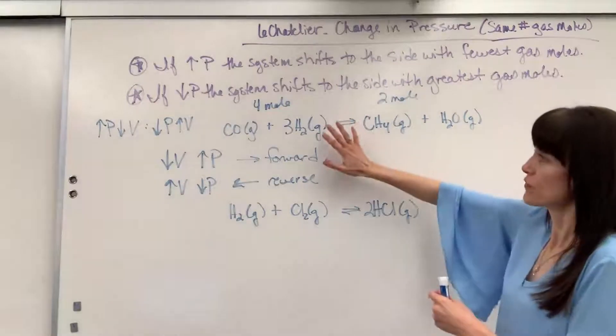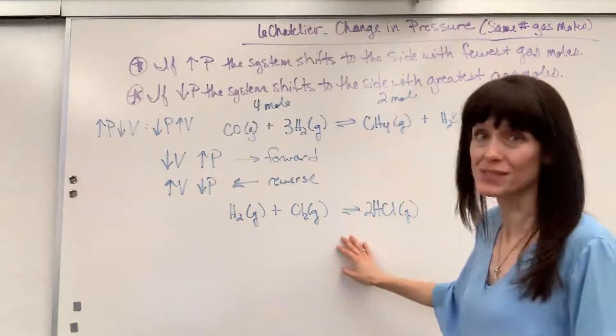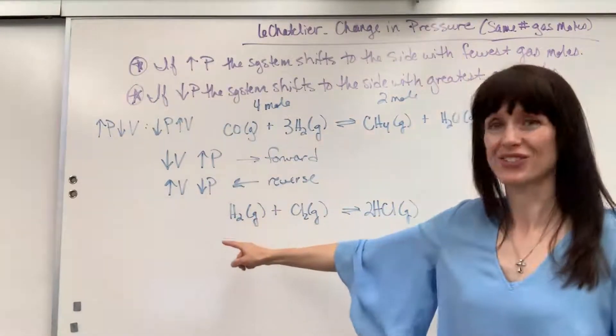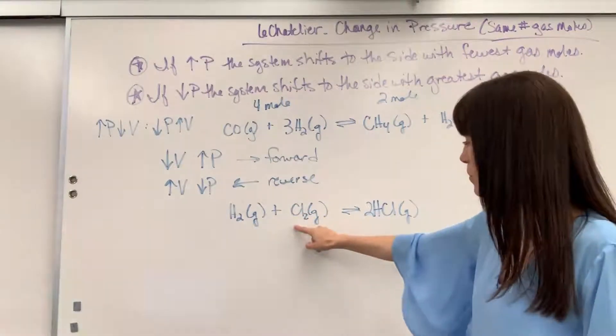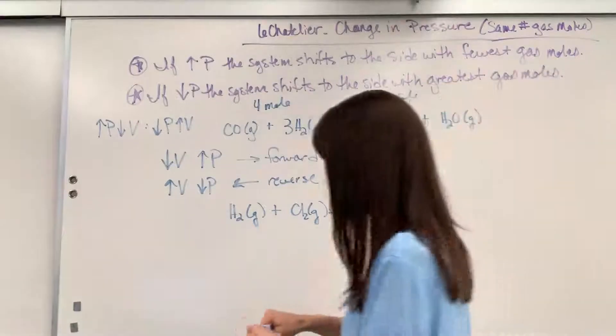If you didn't watch the first video, watch this video on stressing with pressure. Here's a trick though. So I have one mole of hydrogen gas plus one mole of chlorine gas yields two moles of hydrochloric acid. This hydrogen chloride gas is how you'd say that.